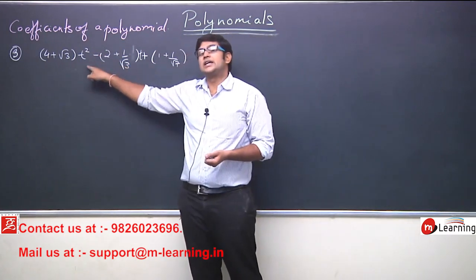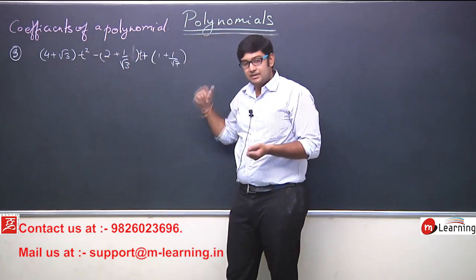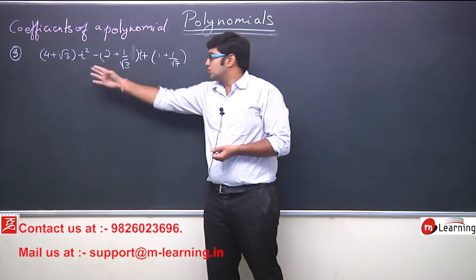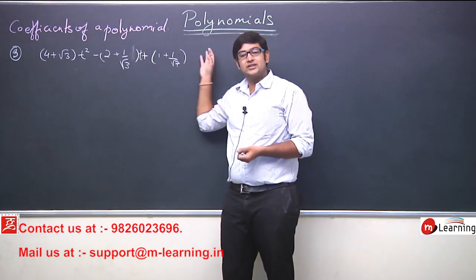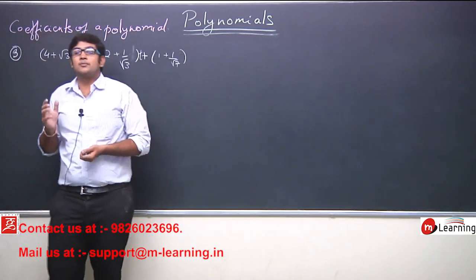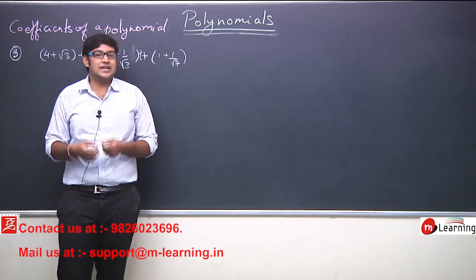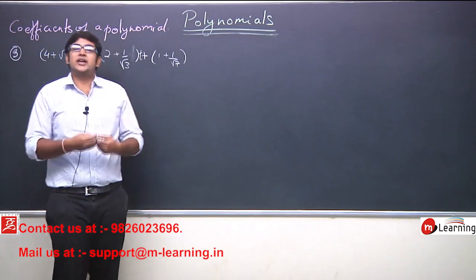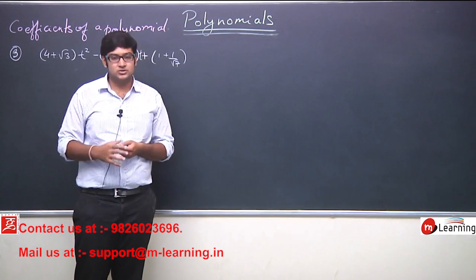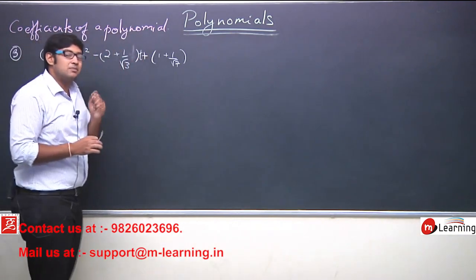Variable कौन सा दिख रहा है? T. T is a variable. Here T is present, T is available with power 0 as well. What is the exponent? Exponent is 2, exponent is 1, and this is 0. So, this expression fulfills all three properties of a polynomial: constant होना चाहिए, variable होना चाहिए, and exponent को whole number होना चाहिए. 2 is a whole number, 1 is a whole number, and 0 is also a whole number. That's why this expression is a polynomial.